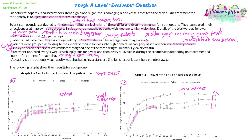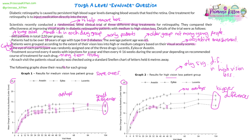Looking at the second graph — for the high vision loss patient group — there are no overlaps at any point between Ilea and all the other drugs. There's clearly a bigger difference between the three towards the end, with Ilea having the most significant mean change. There are still overlaps between the other two drugs, but long-term it does look like Lucentis ends up with a significant difference from Avastin, even though they had a lot of overlaps at the start.